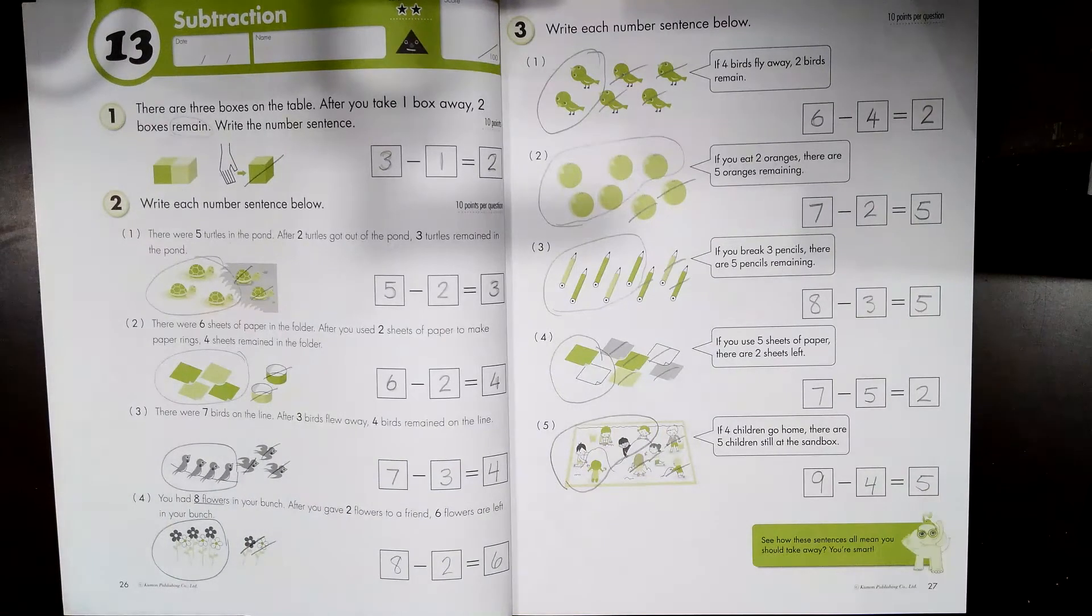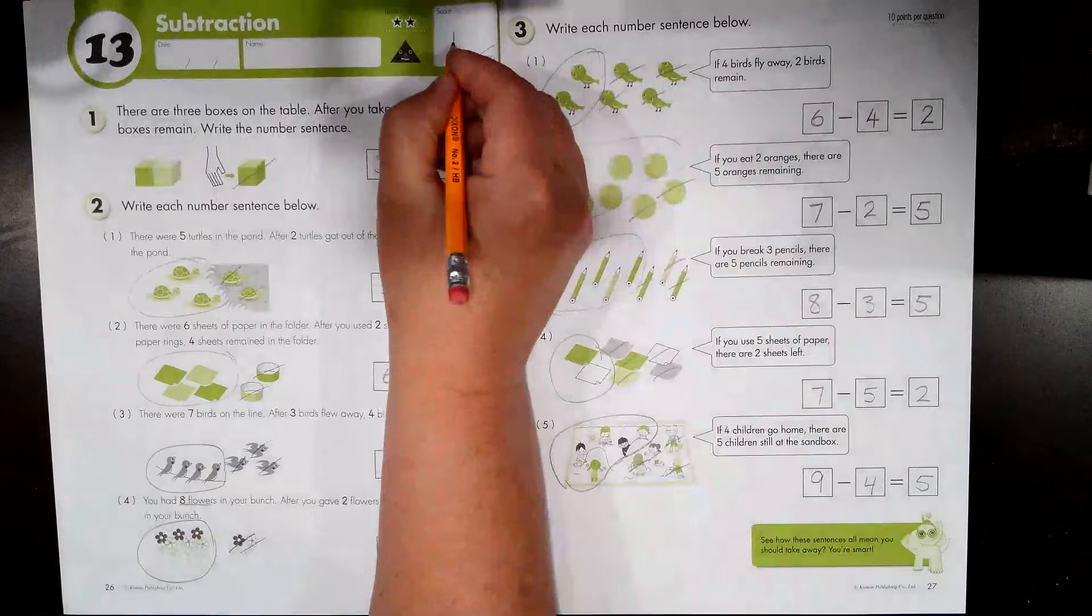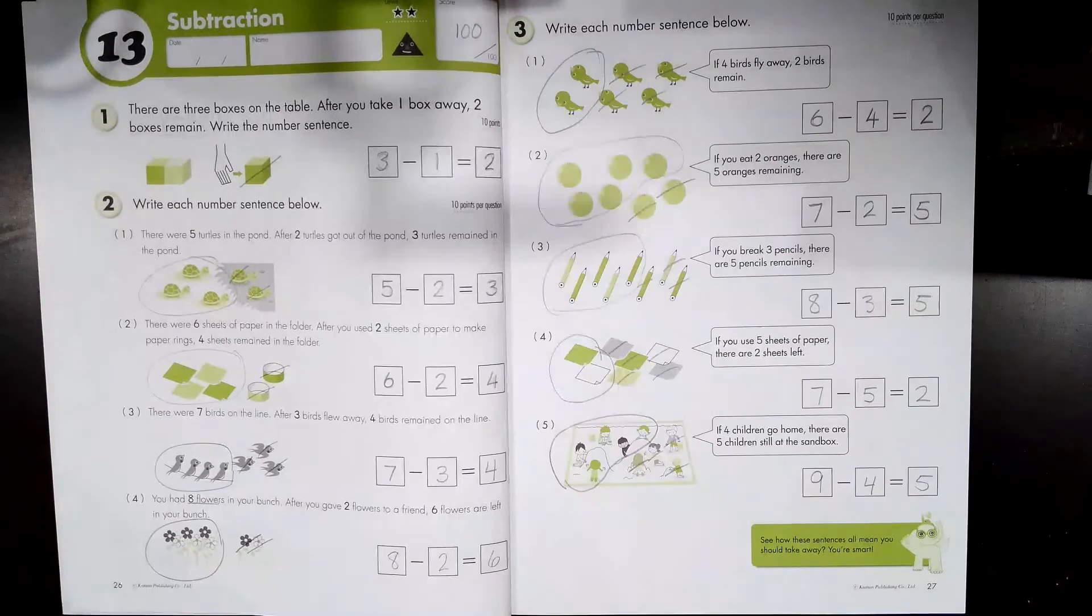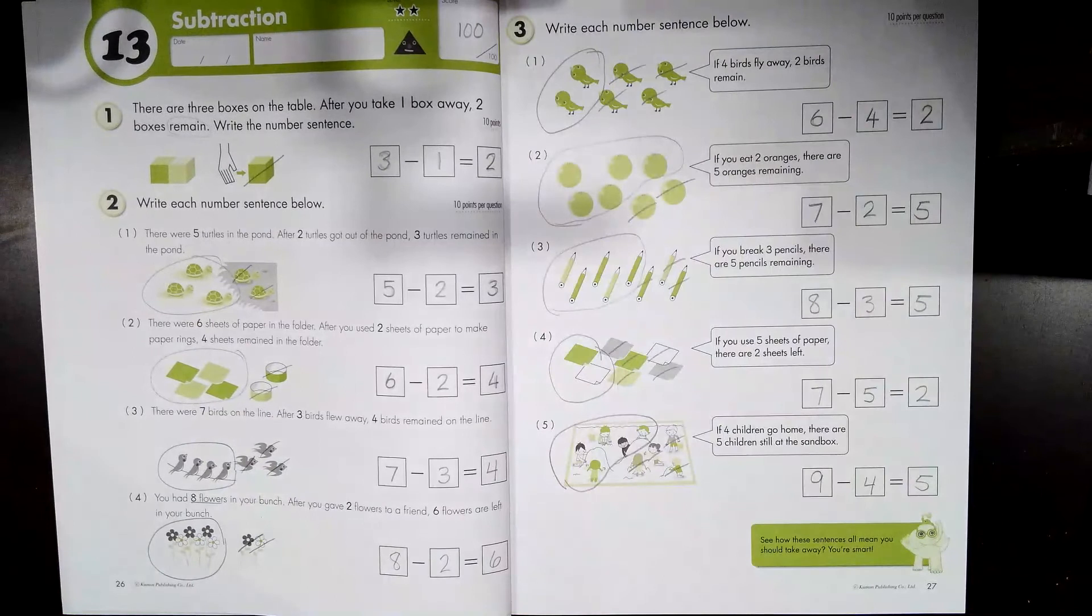Check your work and make sure it looks like mine. If your number sentences don't match mine, you need to go back and try to fix them and see where you made your mistake. Finding your error and fixing it is a really important part of learning. Once your work looks like mine, you've done an excellent job. Give yourself those 100 points at the tippy top, and you are ready to move on to lesson 14.